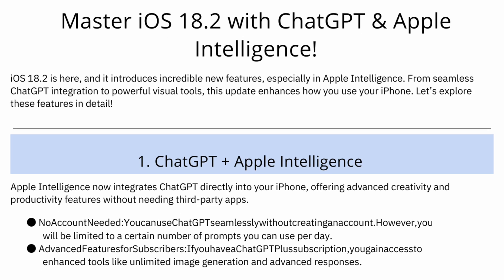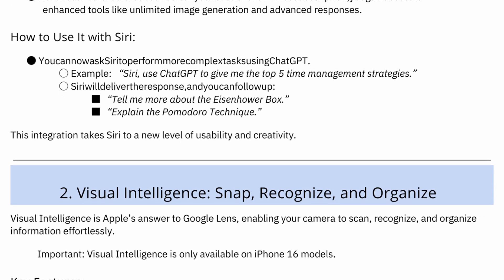So there you have it — iOS 18.2 is packed with Apple Intelligence features that will change the way you interact with your phone. Whether it's the ChatGPT integration, Visual Intelligence upgrades, or the fun Genmoji tool, these features make your device smarter, more efficient, and way cooler. Which feature are you most excited to try? Let me know in the comments. And if you'd like a PDF of all these features, you can download it using the link in the description below. Don't forget to like, subscribe, and share this video for more insights on the latest Apple updates. Thanks for watching, and I'll see you in the next video.